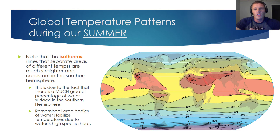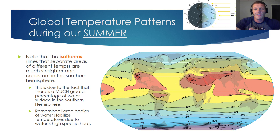In this first image, we're looking at what would be our summer in the Northern Hemisphere. You probably noticed a lot of colors on this map, but I'd like to start off by talking about what are known as isotherms. An isotherm is a line that separates areas of different temperatures. As an example, let's look at the United States right around where the Great Lakes are. In between these two lines indicated on the screen, we would see temperatures between 60 and 70 degrees Fahrenheit on average.